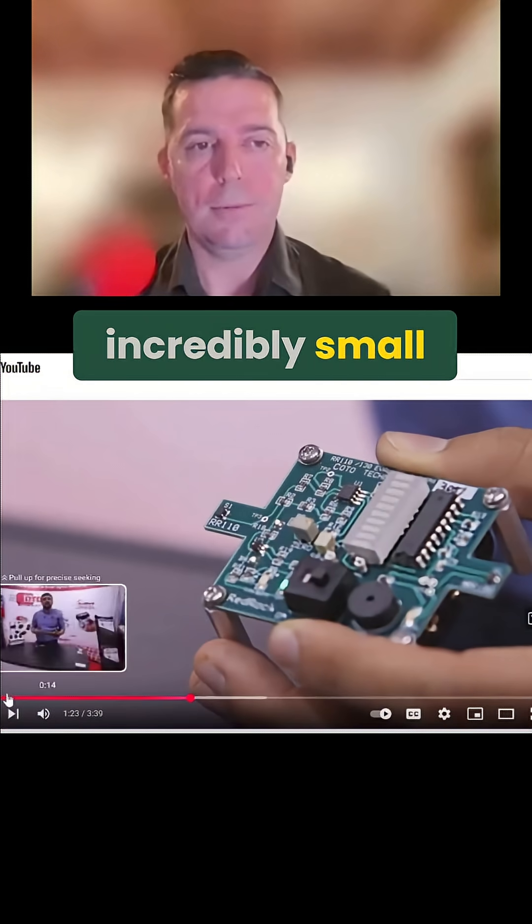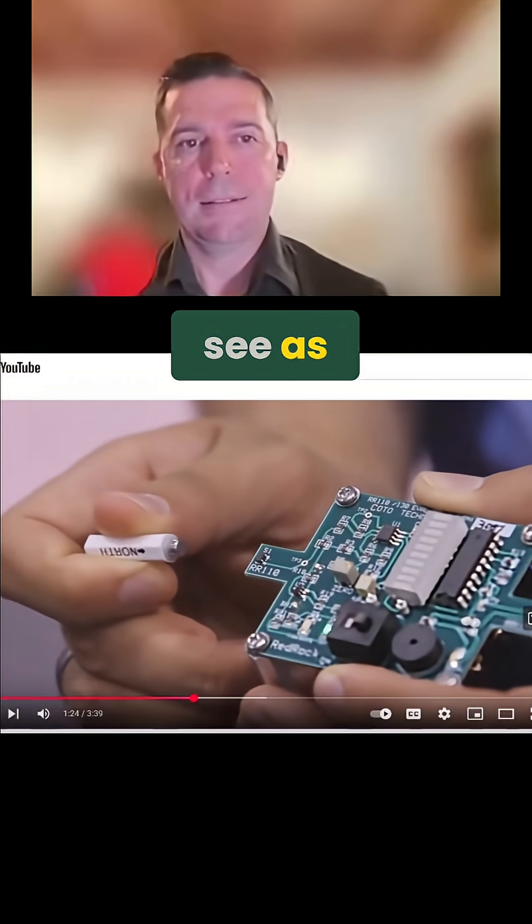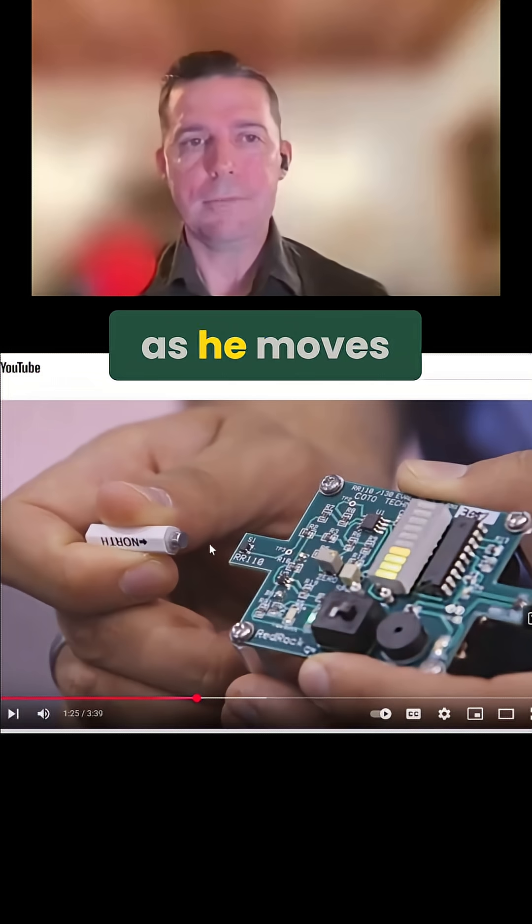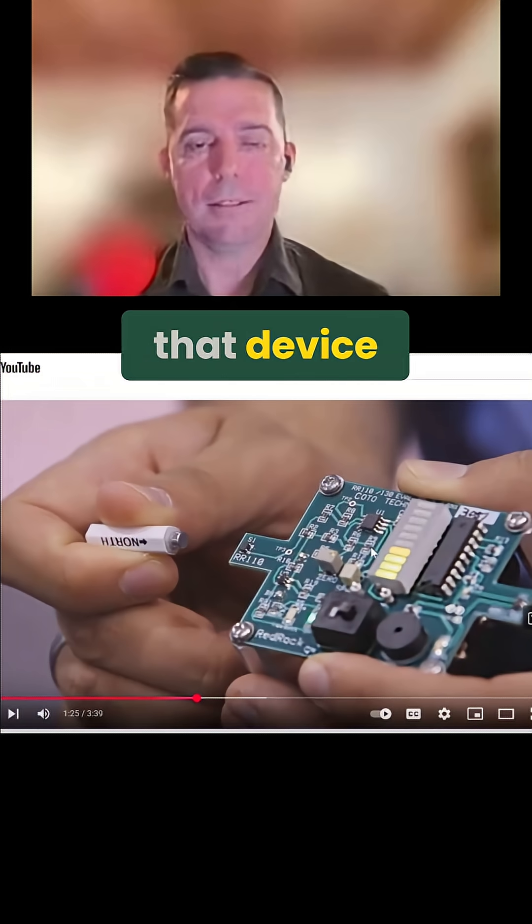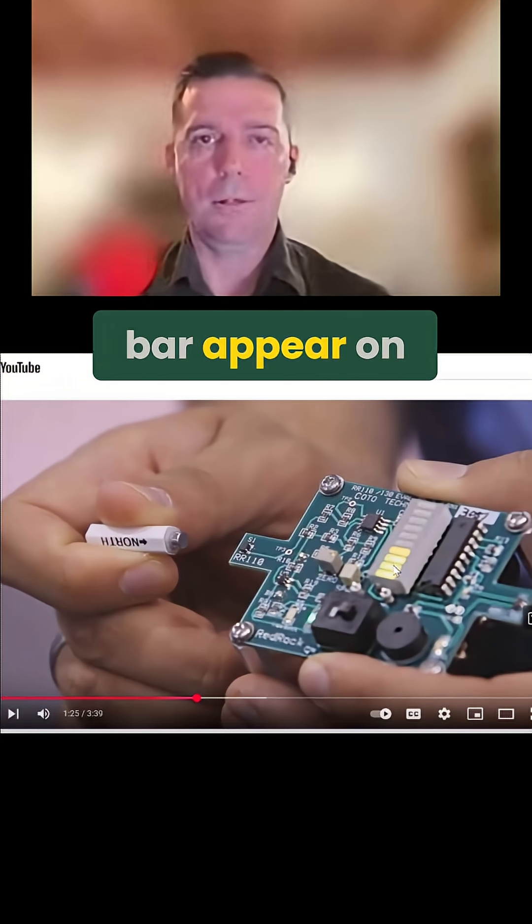The sensor is incredibly small. You'll see as the field moves in, as he moves that field closer to that device, you see a green bar appear on the device.